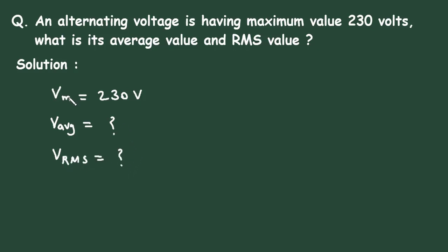Now we know that the relationship between maximum voltage and average voltage is given by Vaverage equals 2 by π, or 0.636. So here we can write 2 by π for the precise value, then multiplied with Vm.